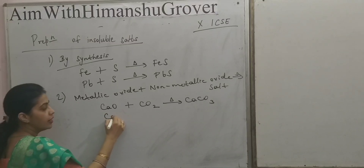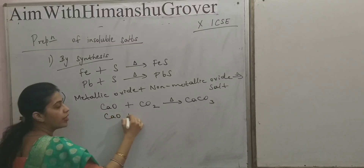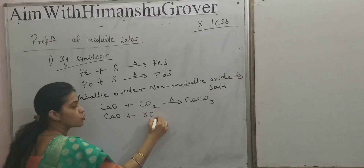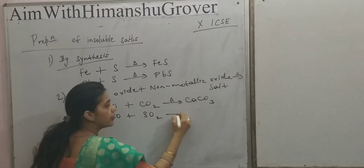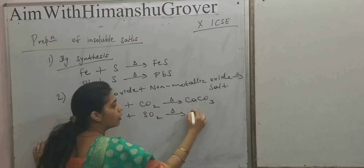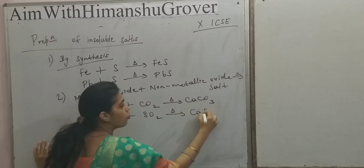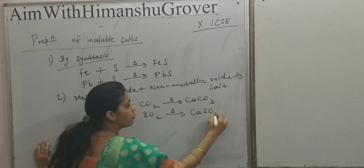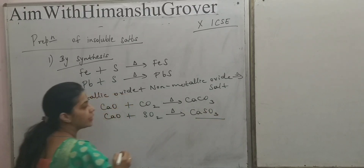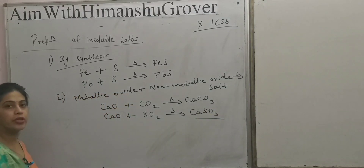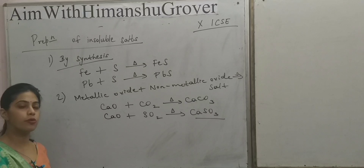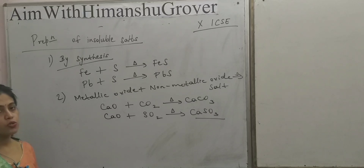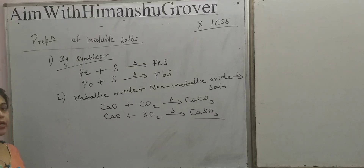Similarly, CaO when heated with SO2, sulphur dioxide, it also forms an insoluble salt, CaSO3, calcium sulphite, which is also an insoluble salt. So this is the second method for preparing an insoluble salt.